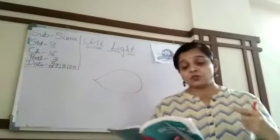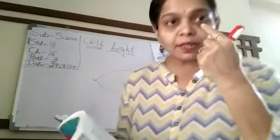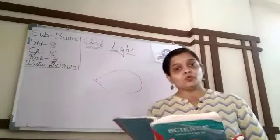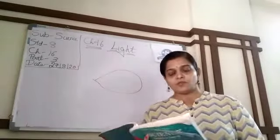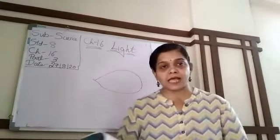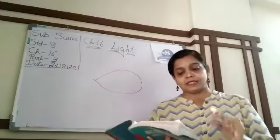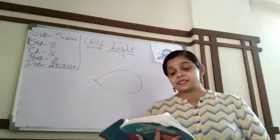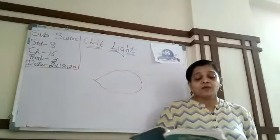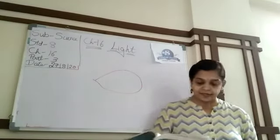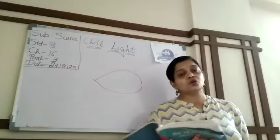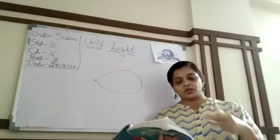Behind the cornea, we find a dark muscular structure called the iris. The dark ball in our eye is called the iris. The iris can have different colors — brown, blue, golden brown, black, or green. The size of the pupil is controlled by the iris. Inside the iris is a small dot called the pupil. The iris controls the amount of light entering the eye.